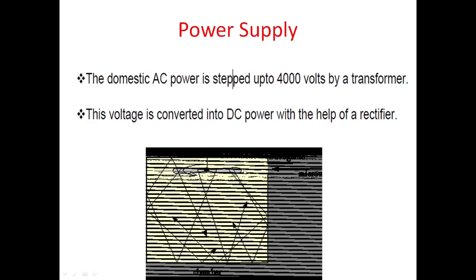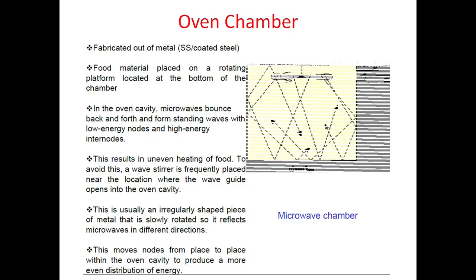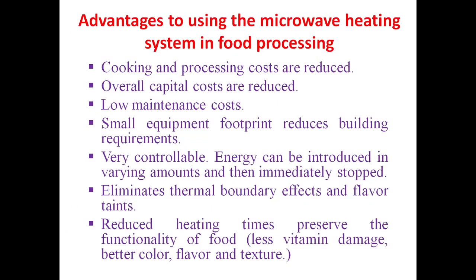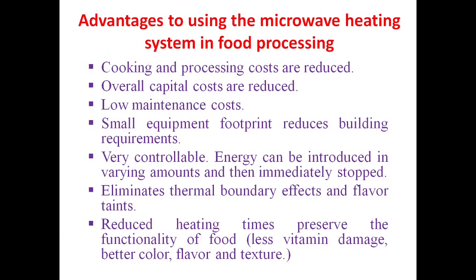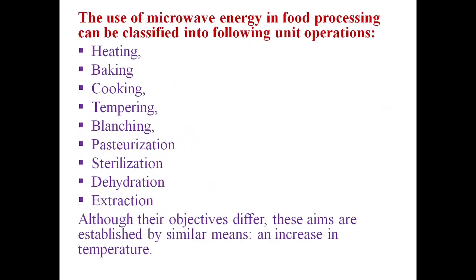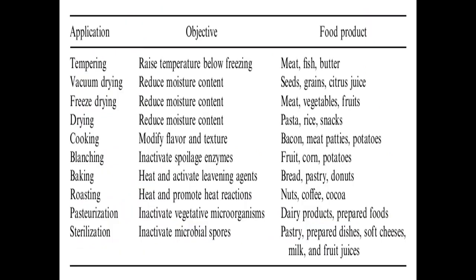The wave stirrer is a rotating fan-like element that reflects microwaves, preventing them from being concentrated on any particular point and ensuring they are uniformly distributed throughout the oven space for uniform cooking of food.